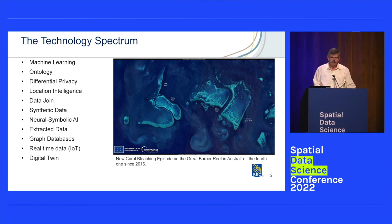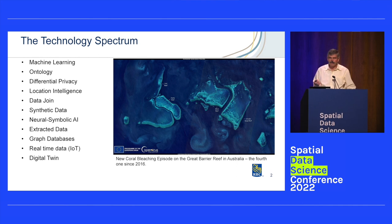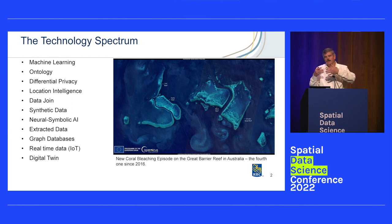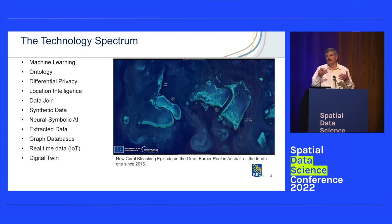Neural symbolic AI is a hybrid of machine learning — neural nets — and the rigors coming particularly from ontology. It basically controls and anchors the exploration that the neural net actually does.